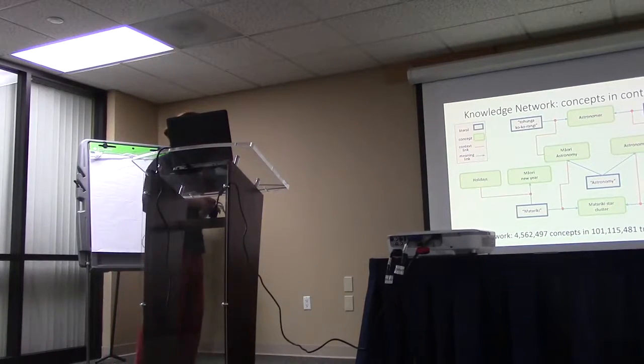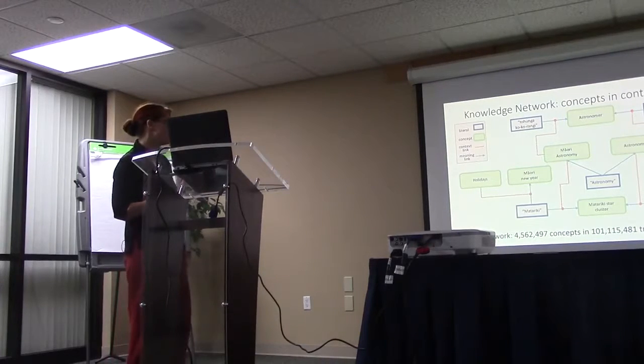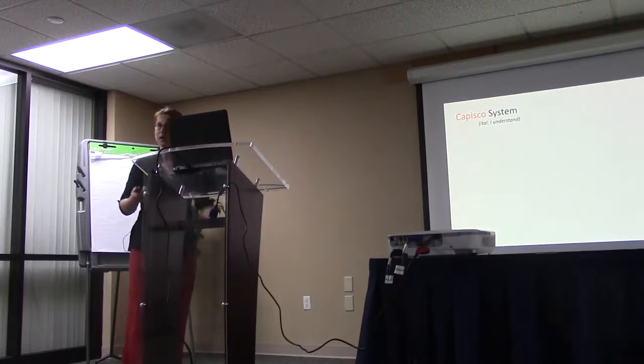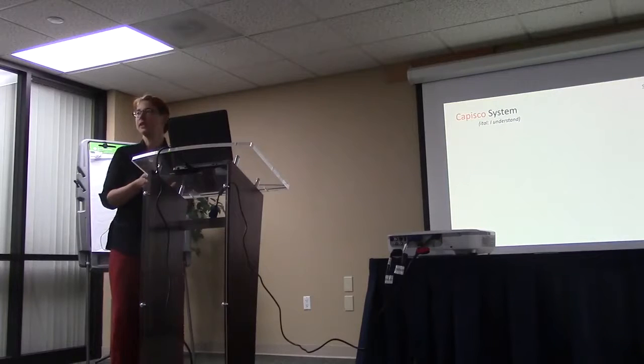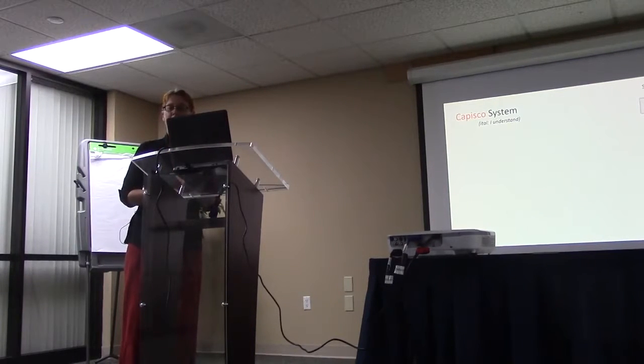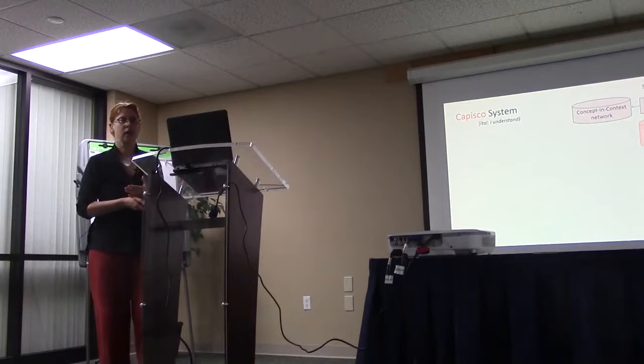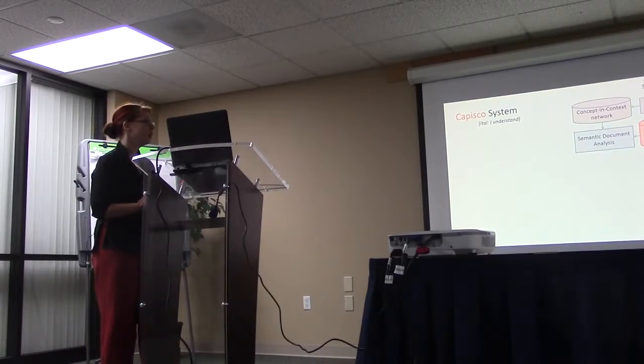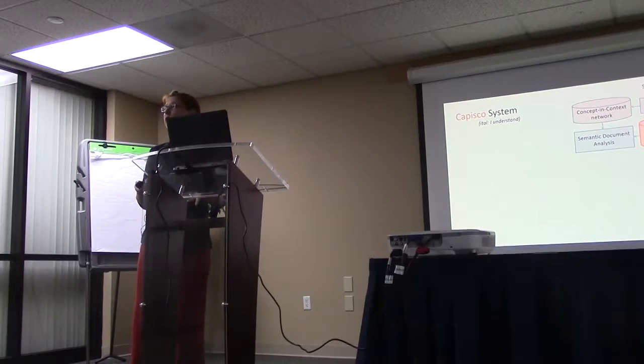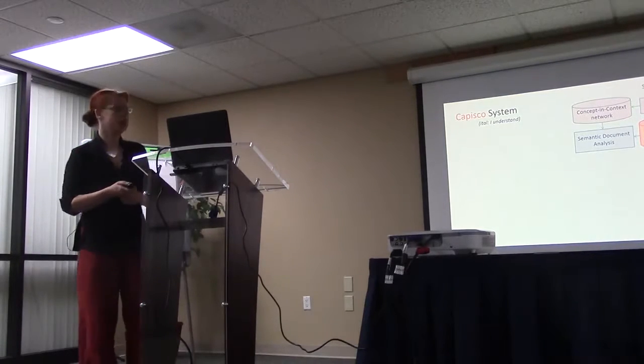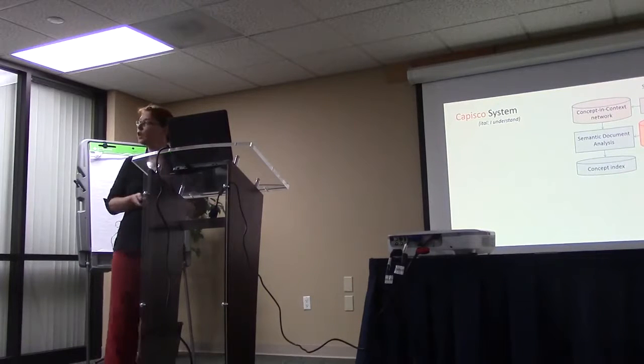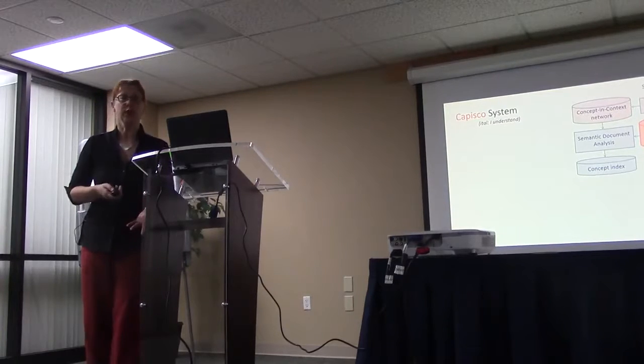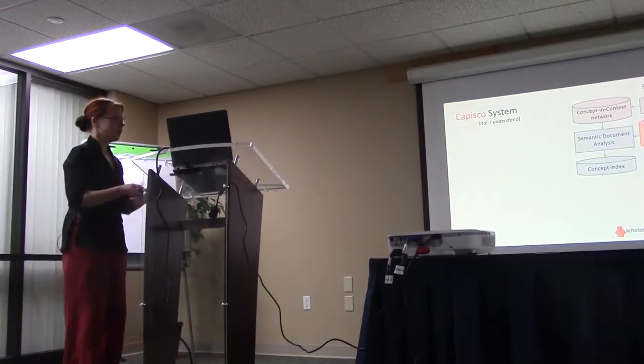So overall we have four million concepts and about a hundred million triples in the network. So for the system, how does that now actually work? So we come along with our seed concepts taken out of Wikipedia. We create the knowledge base, and then we go, in this case, to the HathiTrust corpus, but it would work for any other digital library. And we do semantic document analysis. This is our disambiguation. Going through, analyzing each of the terms that appears and finding out what the concepts are. Then we create the concept index, which looks very much like an ordinary word index, just that it's not words, it's concepts we're referring to.